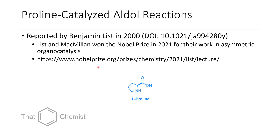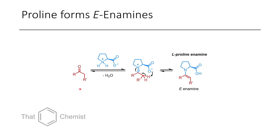If you want to read more about Ben List's work, you can go to nobelprize.org and read his lecture. The proline-catalyzed aldol works as follows: a ketone is treated with proline, which is a naturally occurring amino acid — one of the 21 amino acids. Proline forms an iminium, and then one of the alpha protons can be deprotonated by the deprotonated carboxy group, forming the carboxylic acid and favoring the enamine form. This reaction can happen very easily because it acts like a microcatalyst. Enamines tend to form E-enamines, in contrast to lithium enolates, which tend to form Z-enolates.